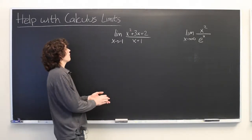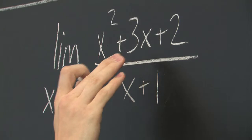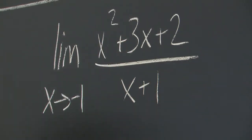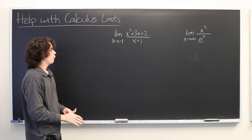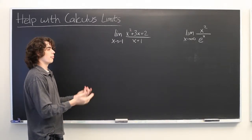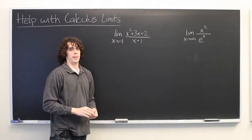So here we have the limit as x approaches negative 1 of x squared plus 3x plus 2 over x plus 1. Now, it is frequently the case in calculus that when we are given the limit of some polynomial, we can simply plug in the value and see what we get.